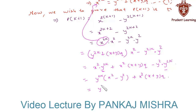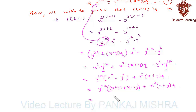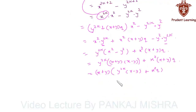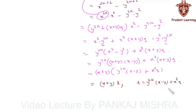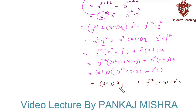Now y to the power 2k times (x squared minus y squared) can be written as y to the power 2k times (x plus y)(x minus y). Keeping the remaining term x squared times (x plus y) times Q, we can take (x plus y) common from both terms. This gives (x plus y) times [y to the power 2k times (x minus y) plus x squared times Q], which we express as (x plus y) times r, where r equals y to the power 2k times (x minus y) plus x squared times Q, and r is a natural number. Thus P(k+1) is divisible by (x plus y), and P(k+1) is true whenever P(k) is true.